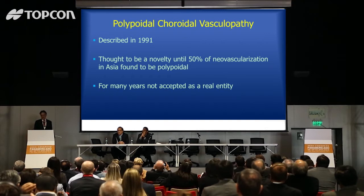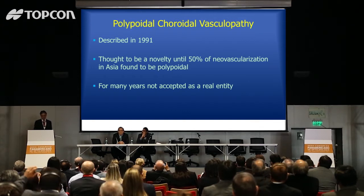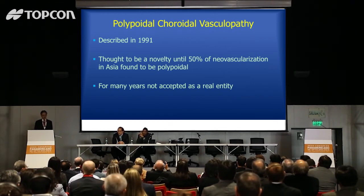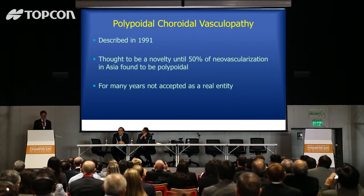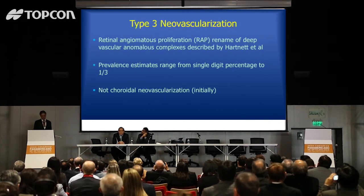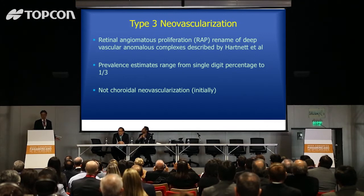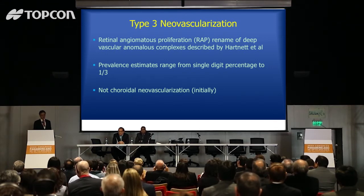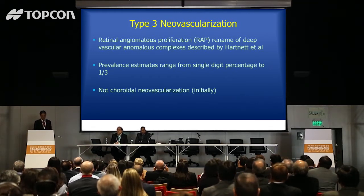Also missing from the 2008 classification was polypoidal choroidal vasculopathy, not so much associated with drusen, which accounts for at least 50% of all neovascularization in Asia. We first described it in our office thinking it was a novelty, found mostly in older white women, but in reality it's found more in pigmented races throughout the world. Type 3 neovascularization arises from the retina and dives towards the choroid or RPE. It's not really choroidal neovascularization — nothing comes from the choroid in type 3 neovascularization, at least at first.